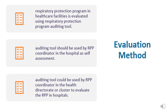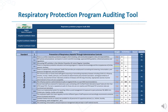Regarding the evaluation method, the Respiratory Protection Program in healthcare facilities is evaluated using the Respiratory Protection Program auditing tool. The auditing tool should be used by the RPP coordinator at the hospital level as a self-assessment tool. It can also be used by the RPP coordinator in the health directorate or cluster to evaluate the performance of the program in hospitals. Using this tool, you can evaluate the performance and effective implementation of all program elements.